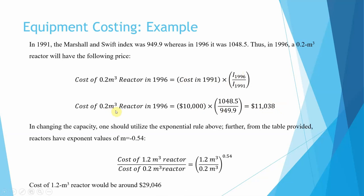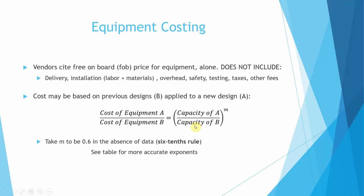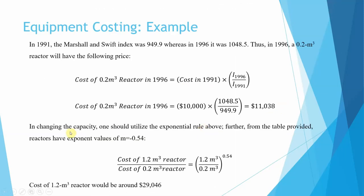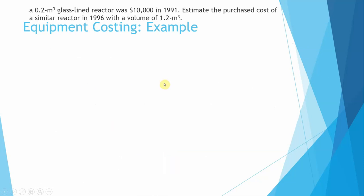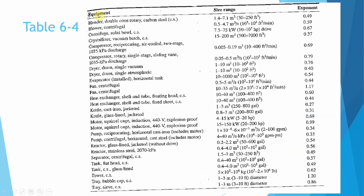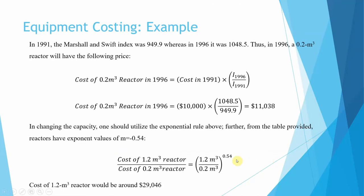Now we also change the capacity using the exponential scaling rule. From the equipment table, a glass-lined reactor has an exponent of 0.54. So the cost of the higher-capacity unit divided by the cost of the lower-capacity unit equals the ratio of capacities — 1.2 divided by 0.2 — raised to the power of 0.54. Applying both the year adjustment and the capacity scaling, the estimated cost of the 1.2-cubic-meter glass-lined reactor in 1996 comes out to approximately $29,000.